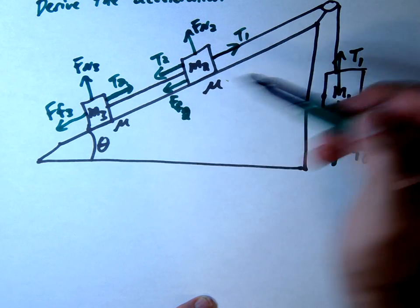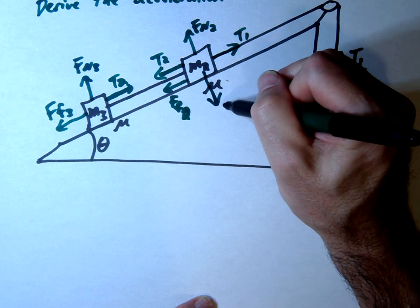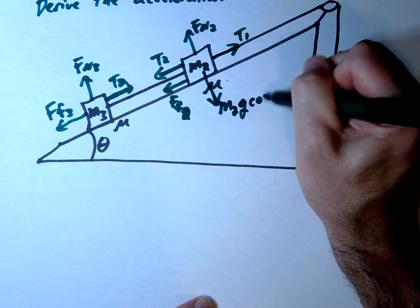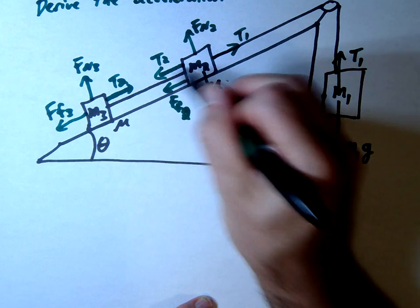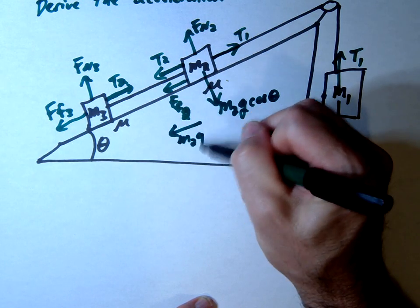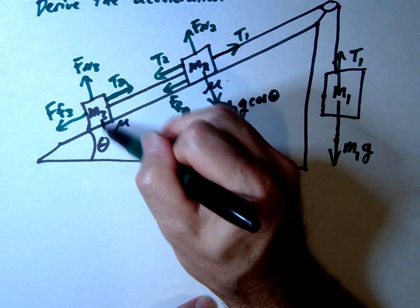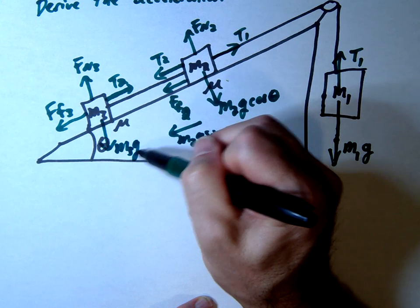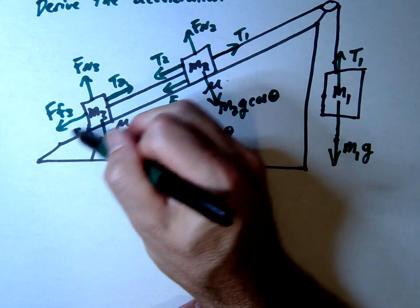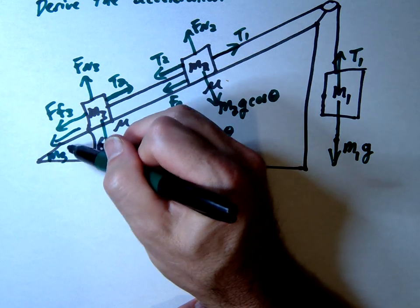Hopefully at this point you can break this up on an incline pretty quickly so I'm just going to do that here. This would be M2G cosine and this one, I'm just going to draw it here. This would be M2G sine and same thing over here. This would be M3G cosine and this would be M3G sine.